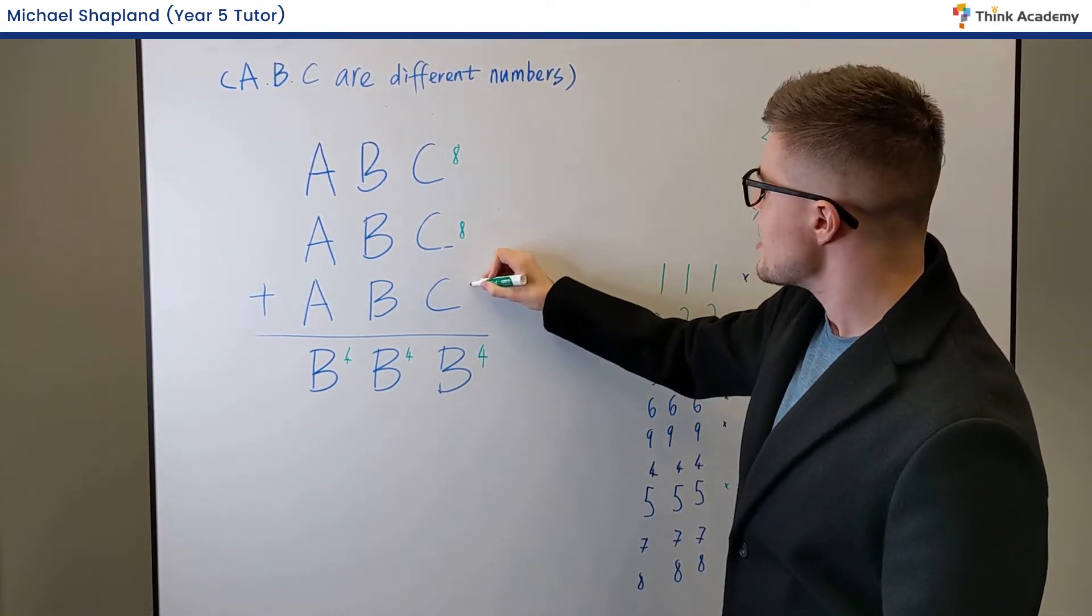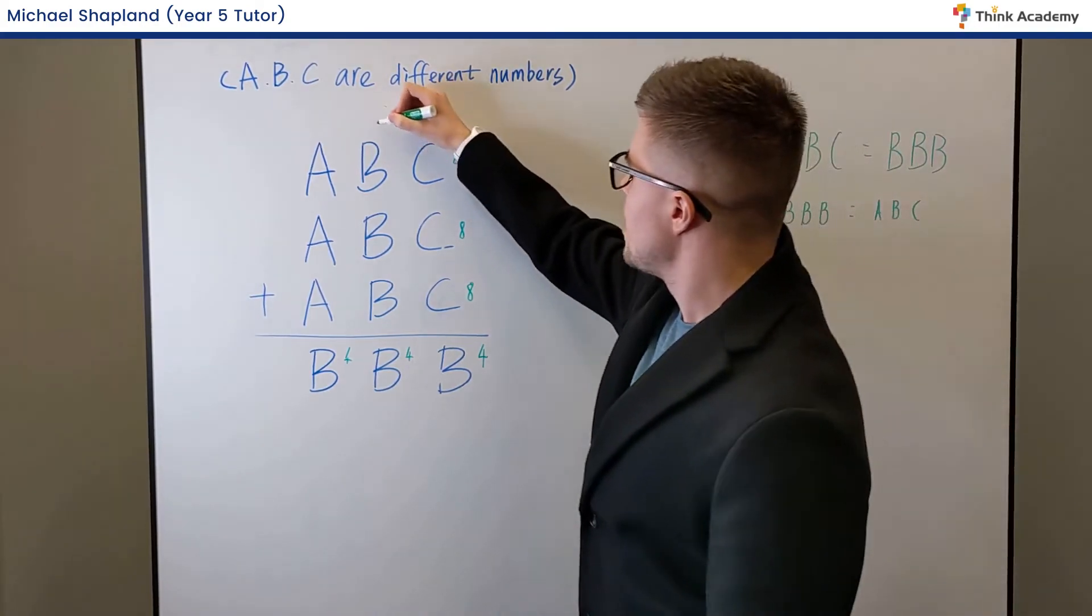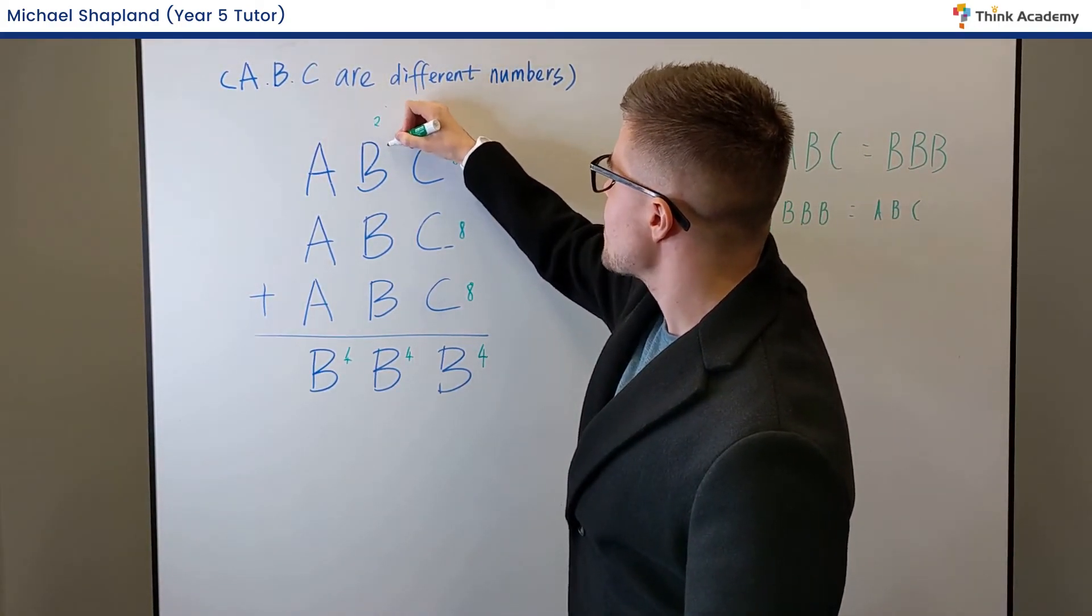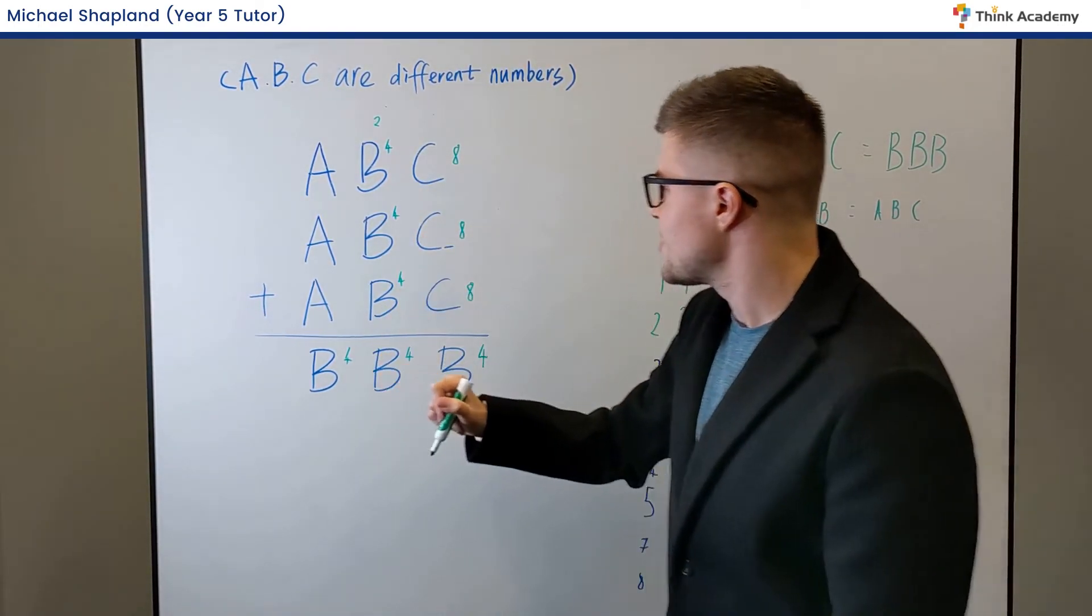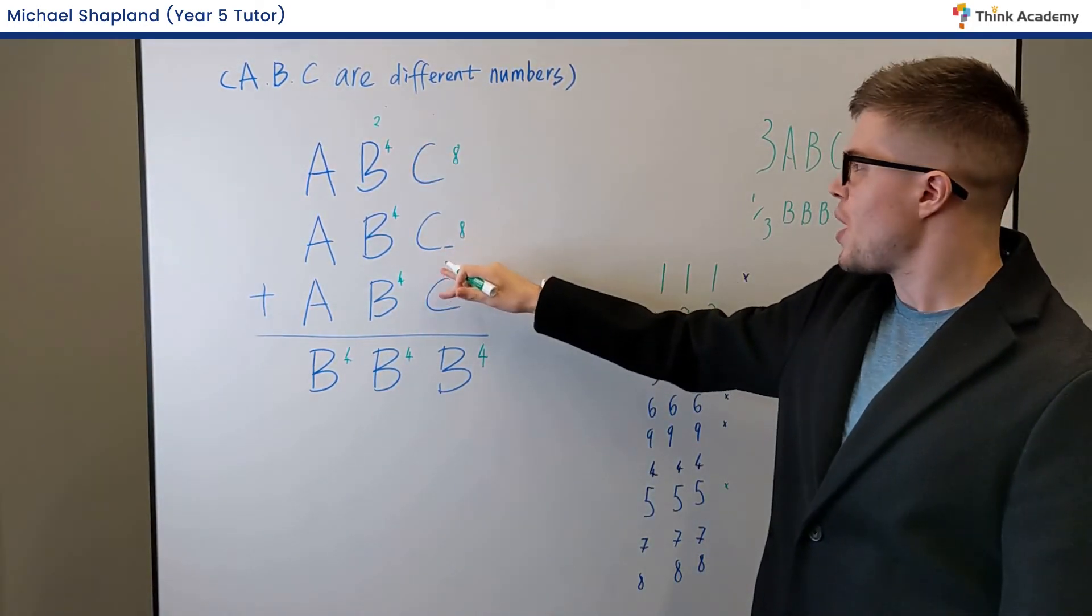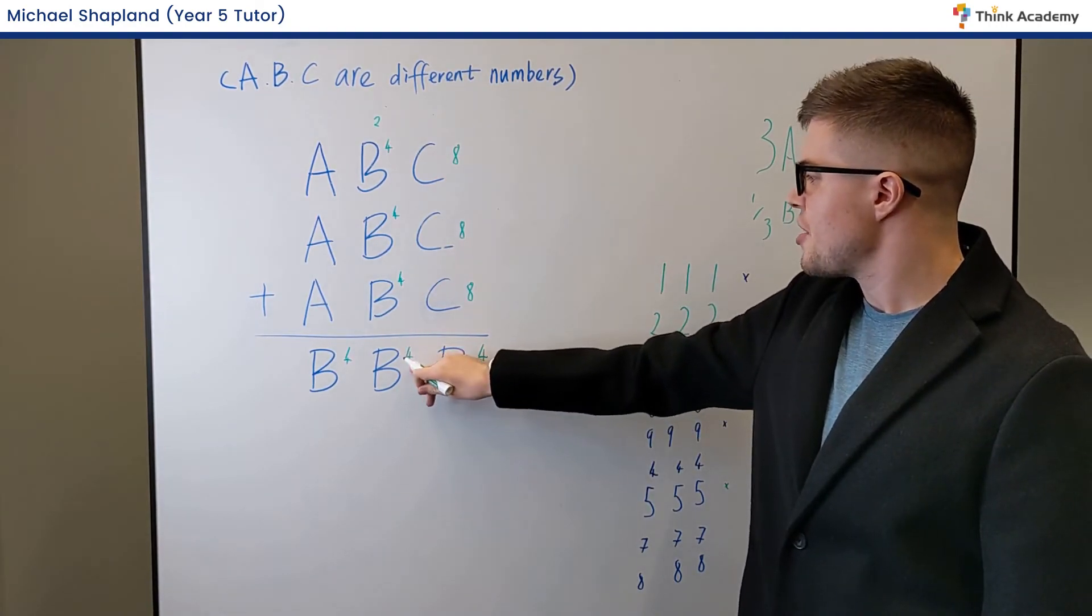Because 8 times 3 equals 24. So again, we carry the 2. And we already know that B is 4. So we can very simply try and confirm this here. 4 times 3 is 12, add 2 is 14. That checks out.